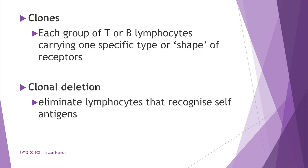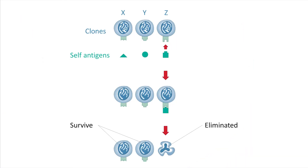The other concept is clonal deletion — the elimination of T or B cells that recognize self-antigens. Self-antigens are antigens of your own body. If we have diverse receptors that can recognize almost all variants of antigens, how can we be sure some receptors won't recognize our own self-antigens and kill our own cells? Clonal deletion is the solution to that problem.